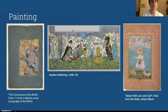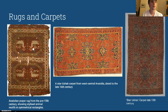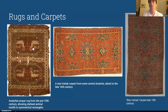Here we have some paintings — examples of really famous works: 'Congress of Birds,' 'Garden Gathering,' and 'Akbar with Lion and Calf.' You can see that these actually do have people in them, but the animals and people are all represented respectfully. Here we also have rugs and carpets, which are mostly used for prayer or hung on walls, and the one on the far right was one of the first examples.